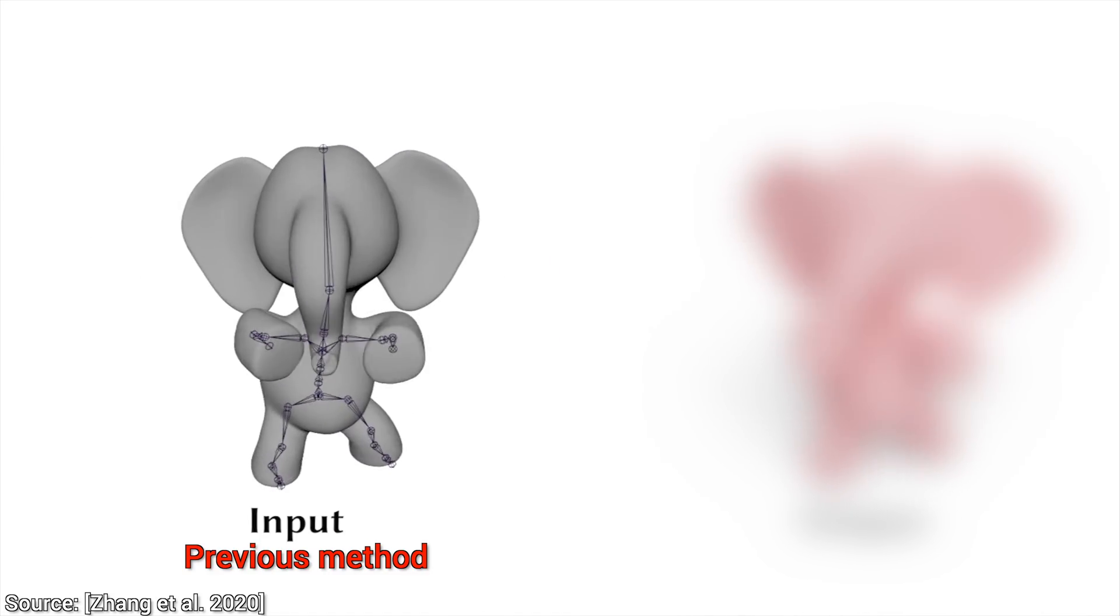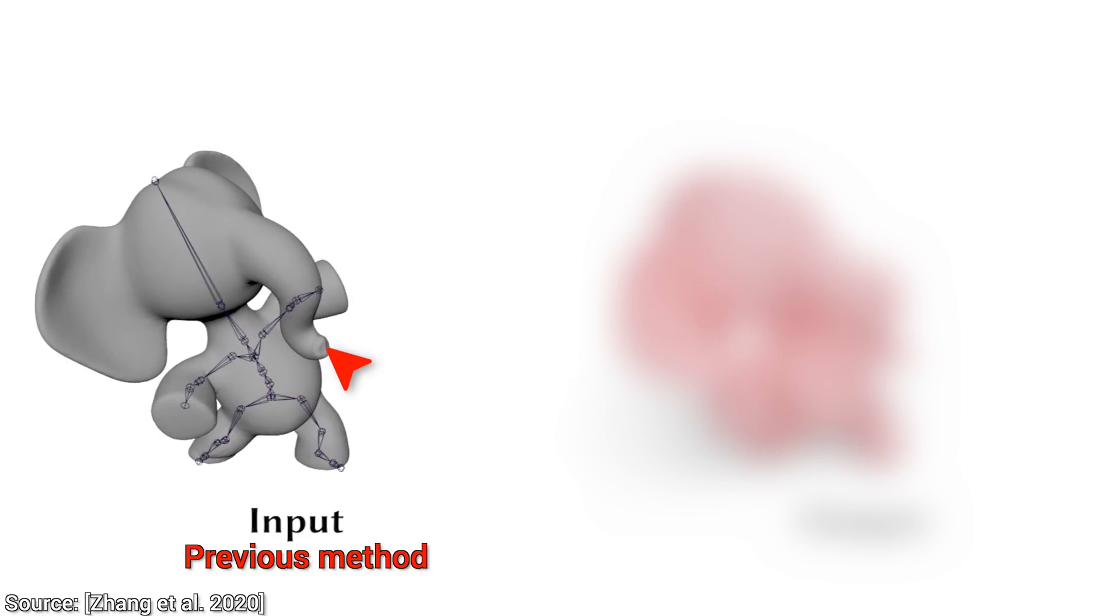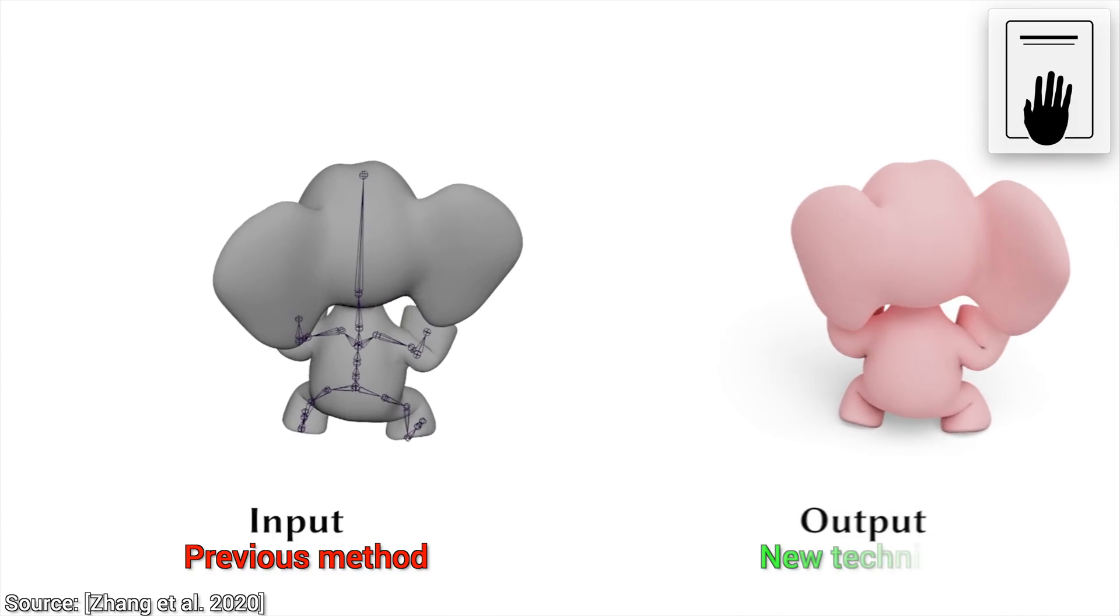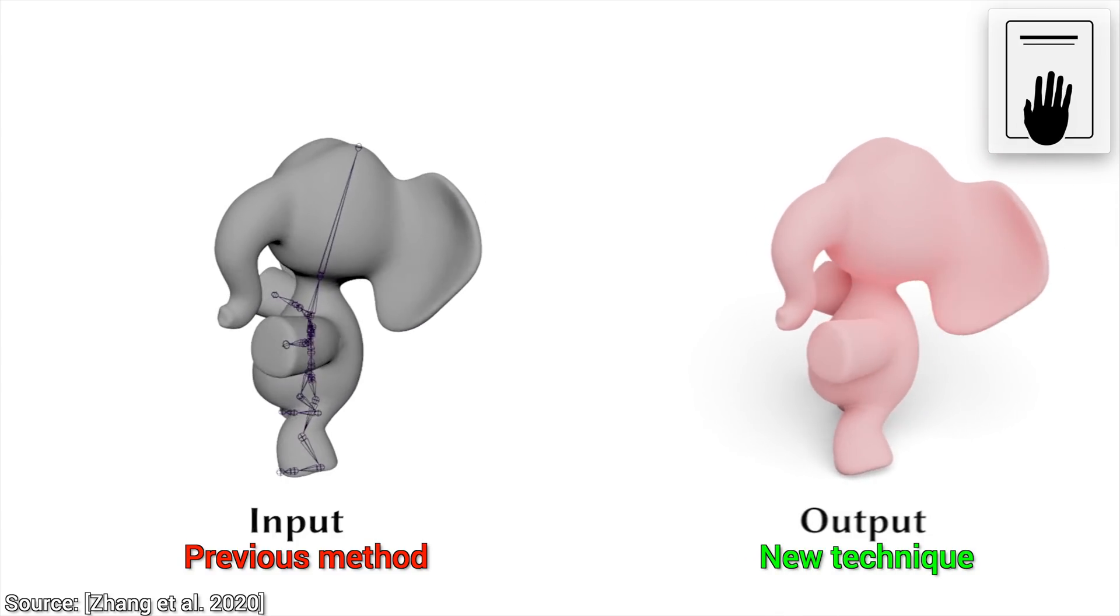We can make it move with traditional methods, well, kind of. You see that the bones and joints are working, but the model is still solid. For instance, look, the trunk and ears are both completely solid. This is not what we would expect to see from this kind of motion. So, can we do better than this? Well, hold on to your papers, and let's see how this new technique enhances these animations.